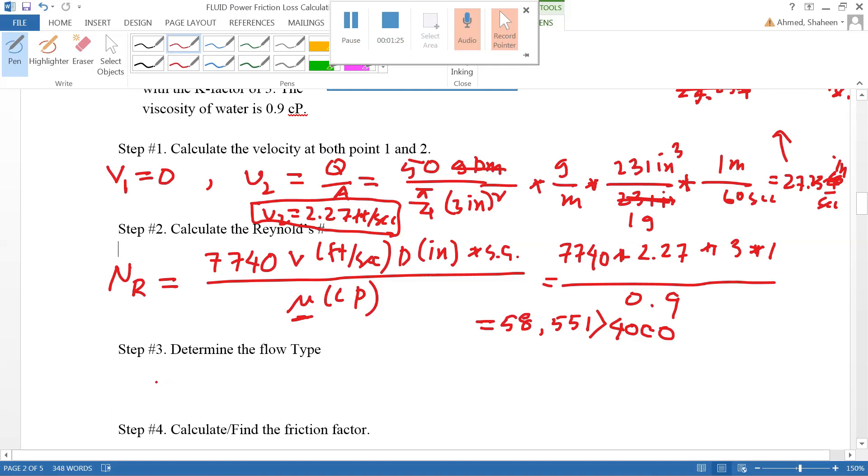That would be turbulent flow because the Reynolds number we calculated, 58,551, is greater than 4000.